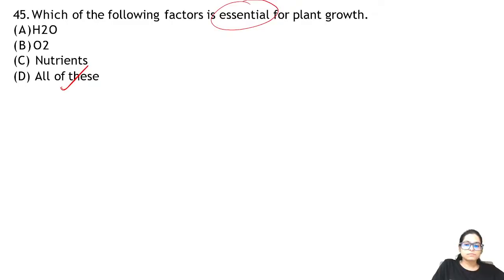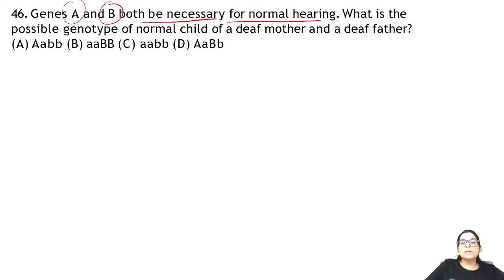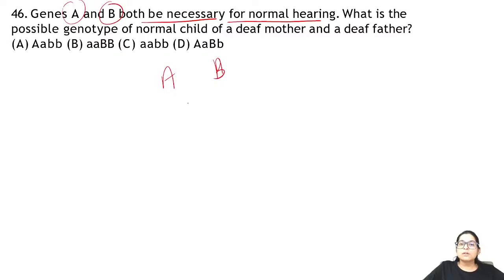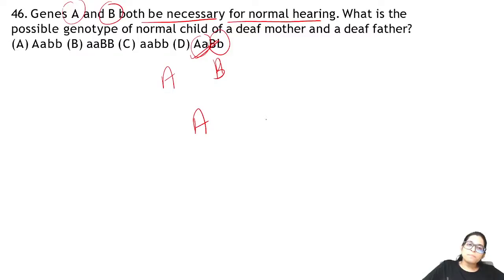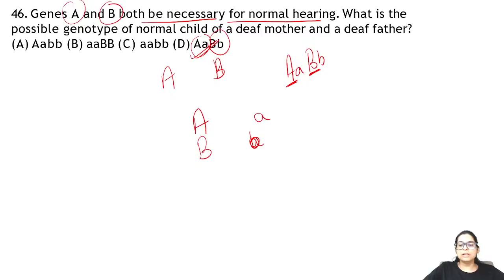Question 46: genes A and B are both necessary for normal hearing. A deaf mother and a deaf father — what is the possible genotype of a normal child? The normal child can hear with dominant A and dominant B. The child must be heterozygous at both loci, so dominant is normal hearing. Answer is D.